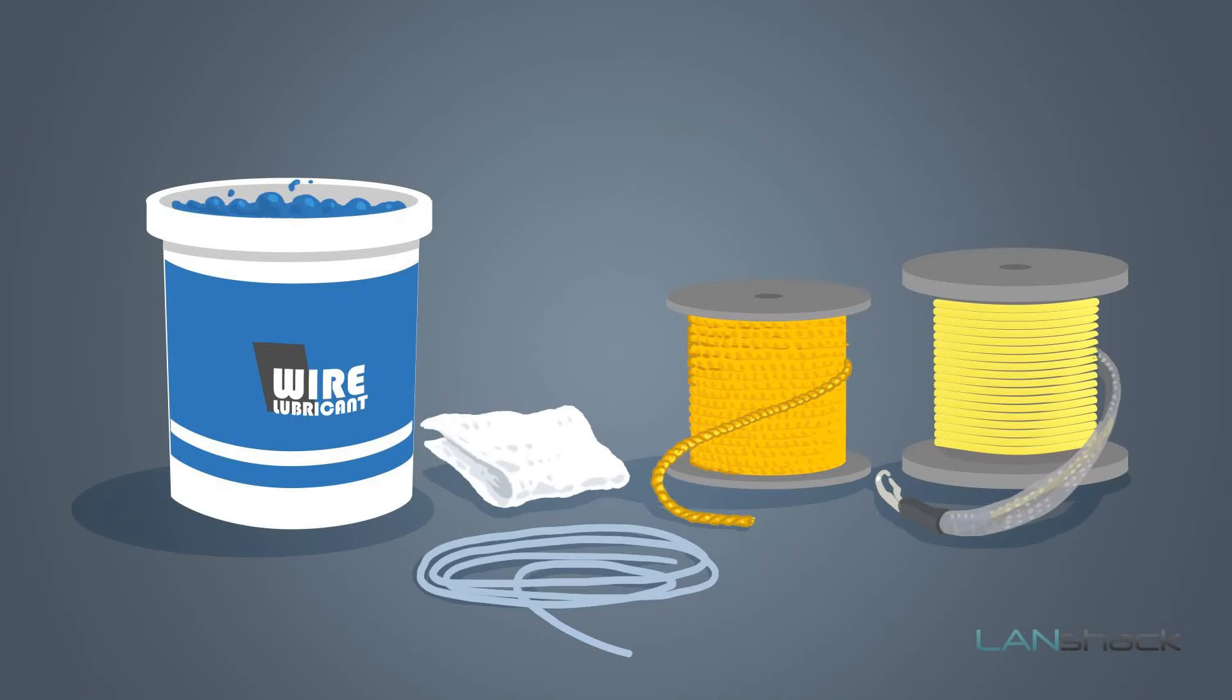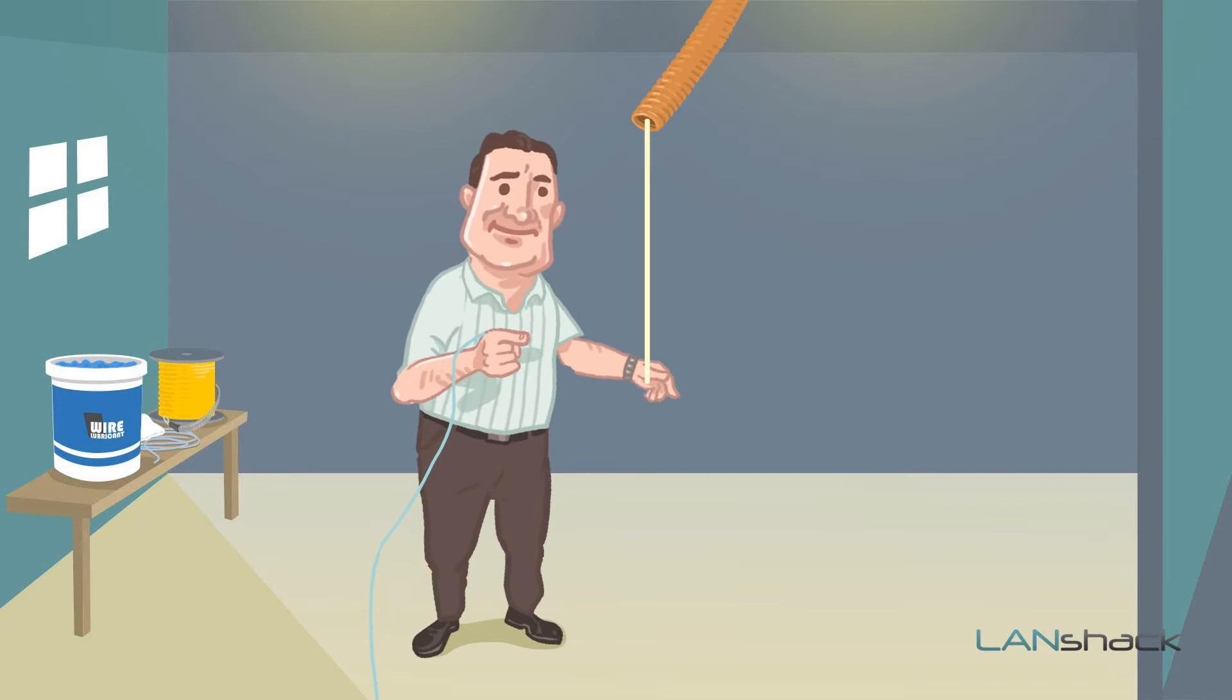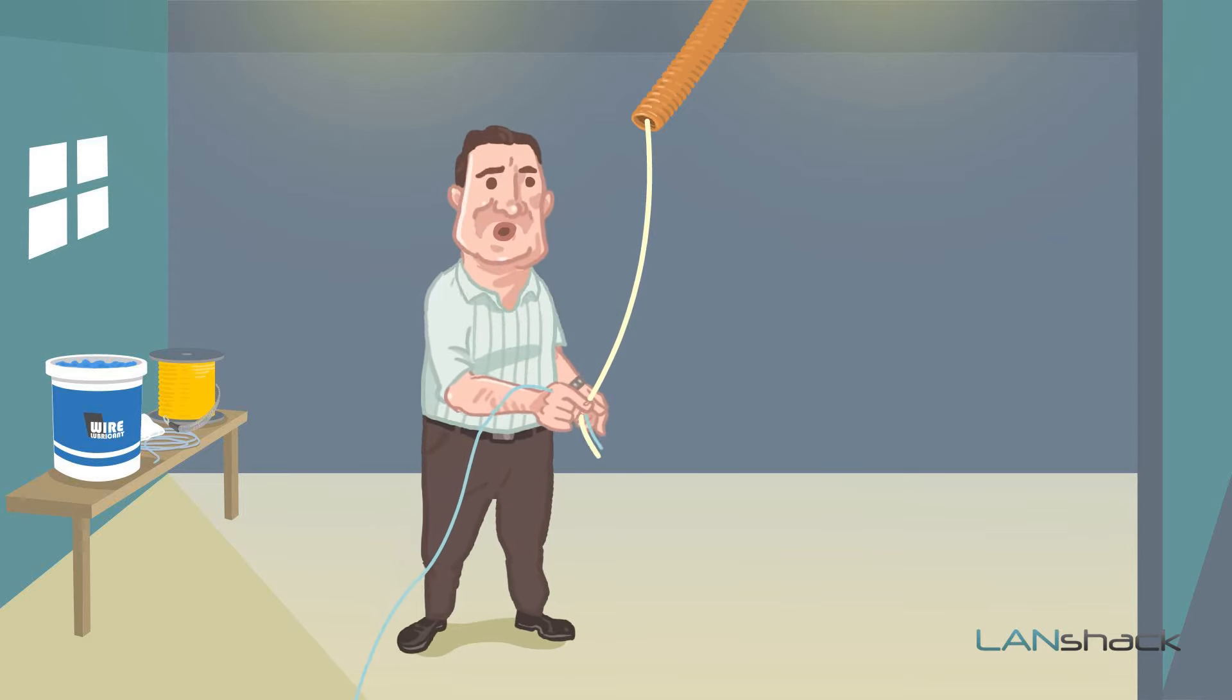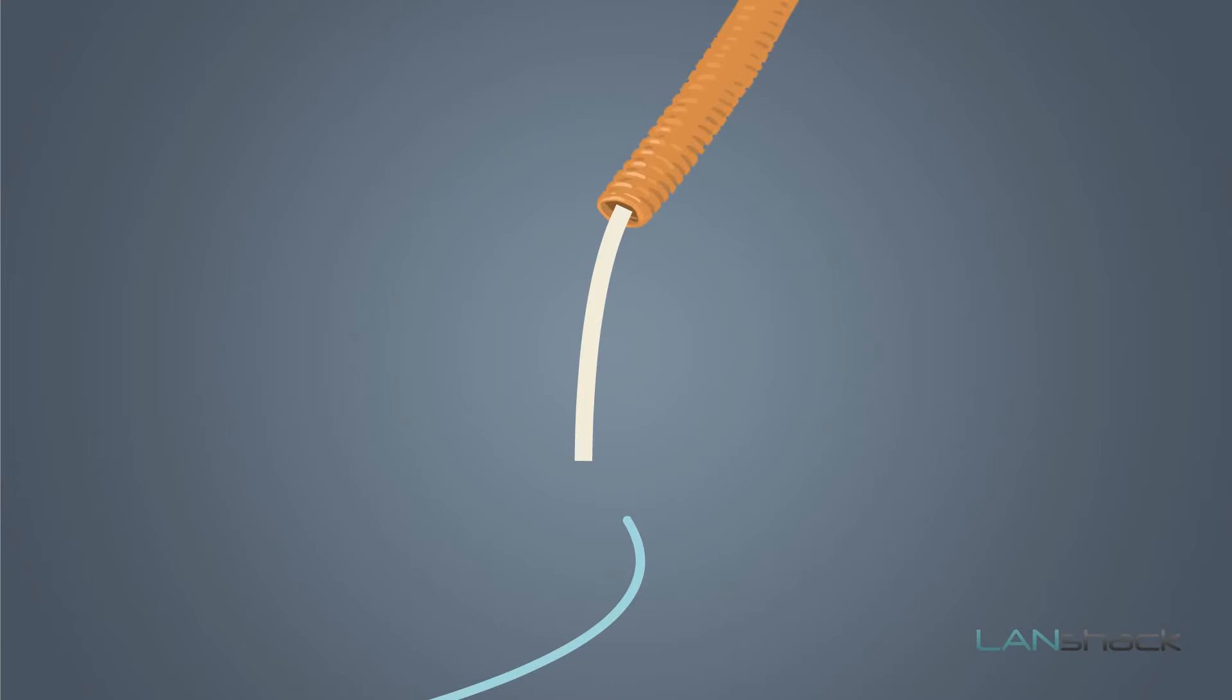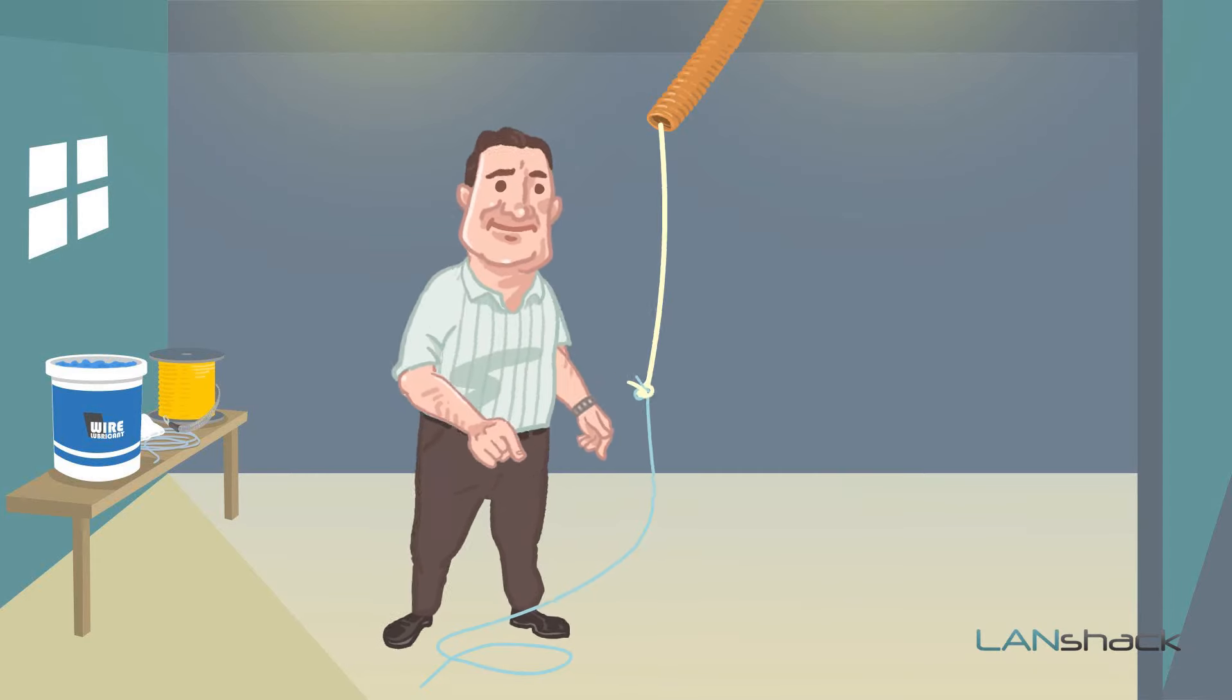Don't forget to also have a rag to use as a method of pre-lubricating the conduit. To get started, attach the pull string onto the pull rope that is inside of the inner duct and make a simple knot by holding both ropes together in parallel and then making one knot between the pull rope and the string.